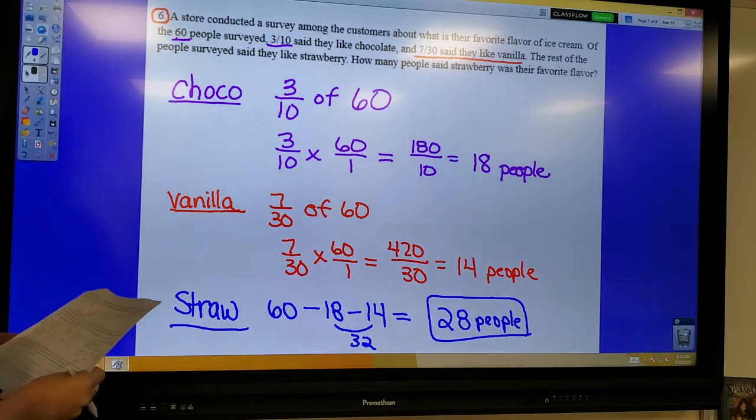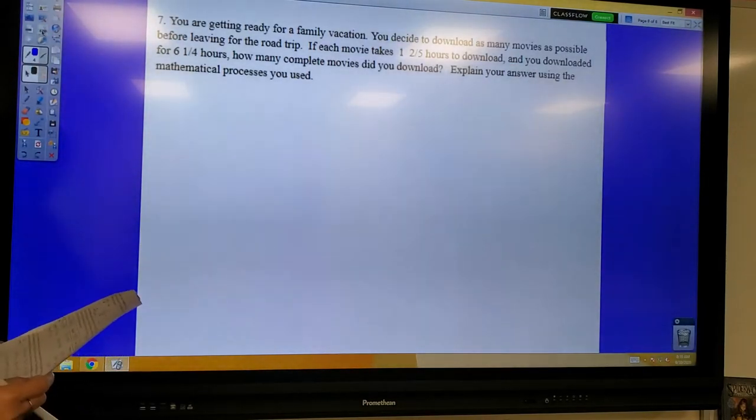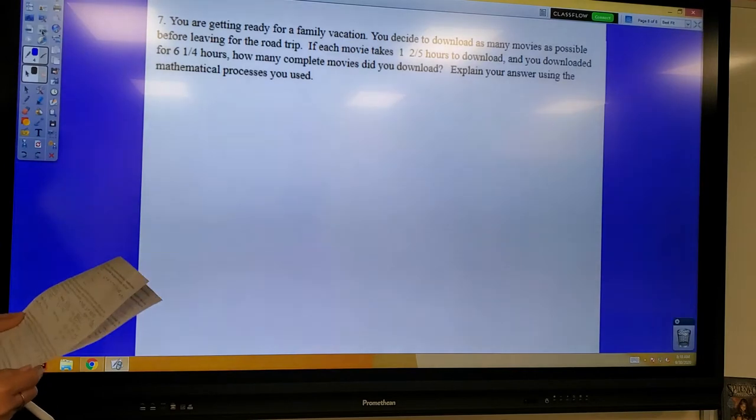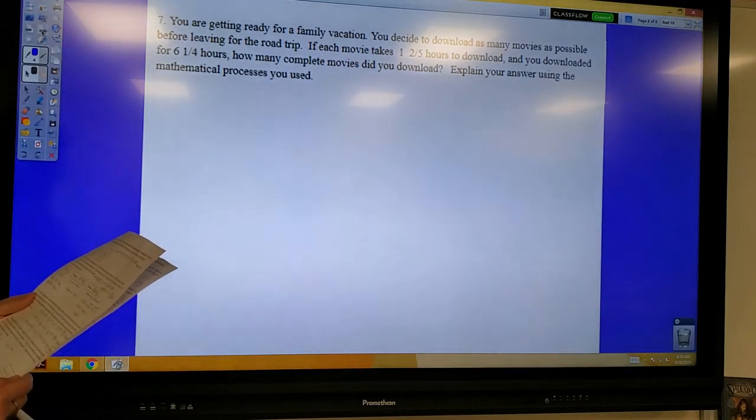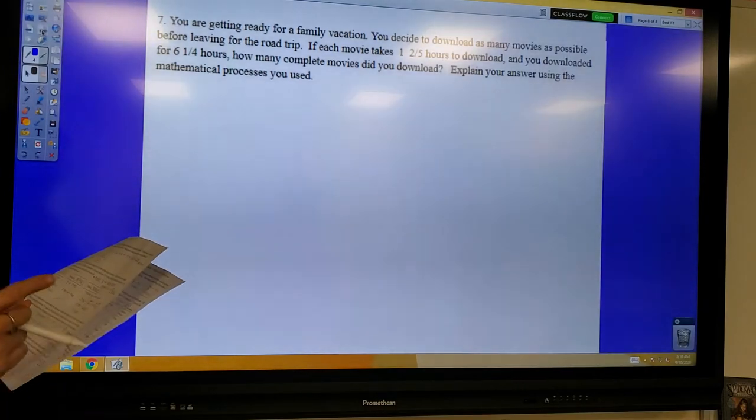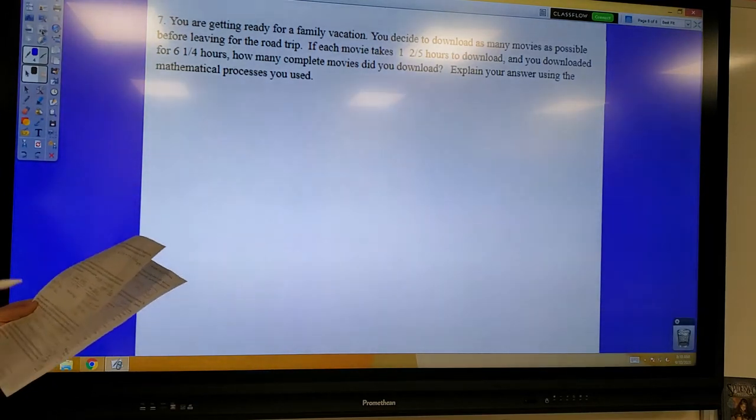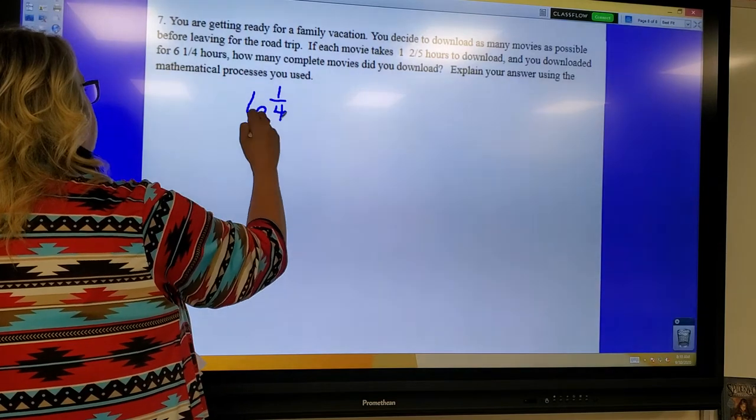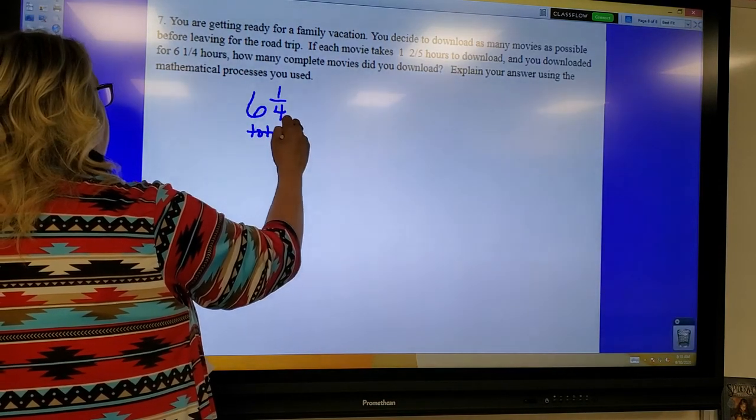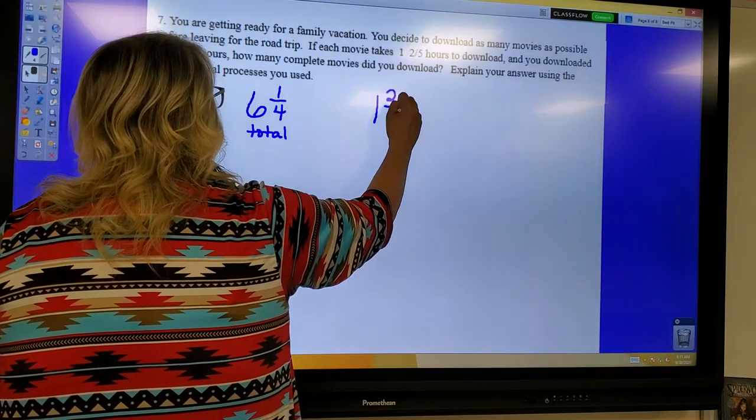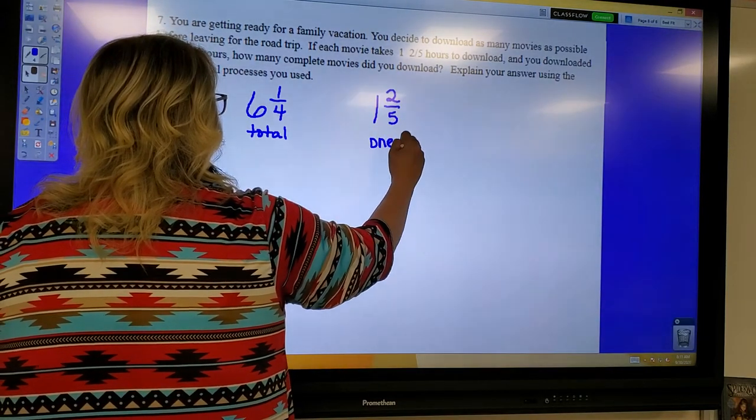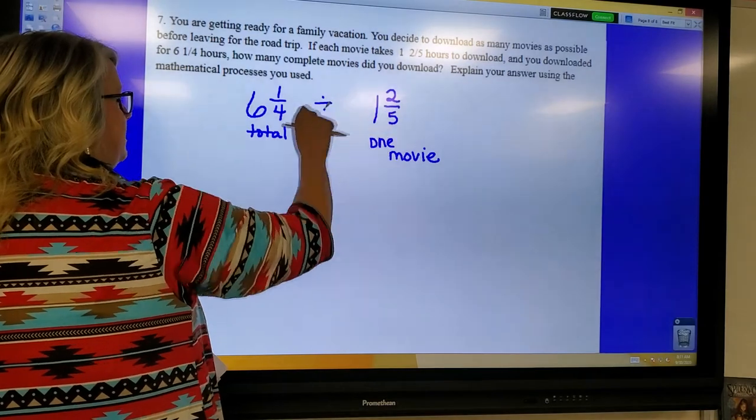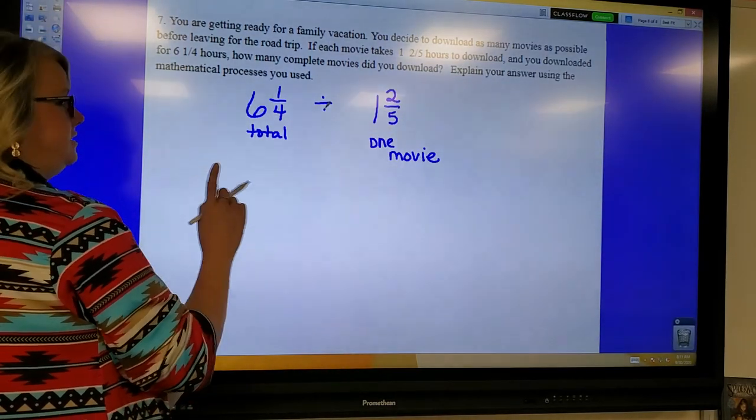Okay. Moving on to our last problem question. Number seven says, you are getting ready for a family vacation. You decide to download as many movies as possible before leaving for a road trip. If each movie takes one and two-fifths hours to download and you downloaded for six and one-fourth hours, how many complete movies did you download? Explain your answer using the mathematical processes you used. Okay. So, if you had six and one-fourth hours total to download and each movie takes one and two-fifths hours, so this is one movie, we can divide the total time you have to download movies by the time it takes to download one movie.